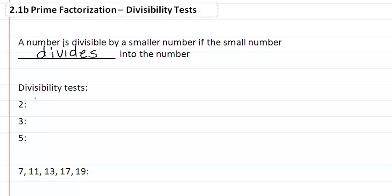We have some divisibility tests that make it a little bit easier to tell if a number is divisible by another number. 2 is one you probably already know, and we know that if it ends in a 0, 2, 4, 6, or 8 it's divisible by 2.